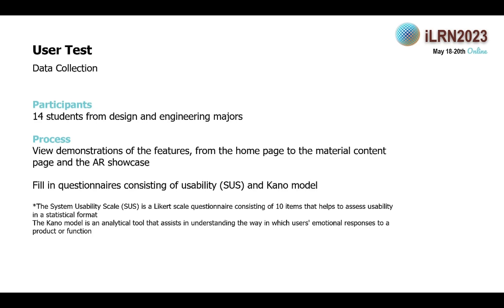We conducted a user test with 14 students from design and engineering majors who had prior experience learning about materials. First, they viewed a demonstration of features from the home page to the material content page and the AR showcase. Then they filled in a questionnaire consisting of the System Usability Scale and the Kano model. The System Usability Scale is a Likert scale that helps assess usability in a statistical format, while the Kano model is an analytic tool that assists in understanding how users' emotions respond to a product or function.